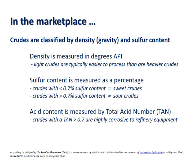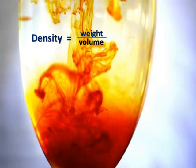Acid content is measured by total acid number, or TAN. Crudes with a TAN greater than 0.7 are highly corrosive to refinery equipment.